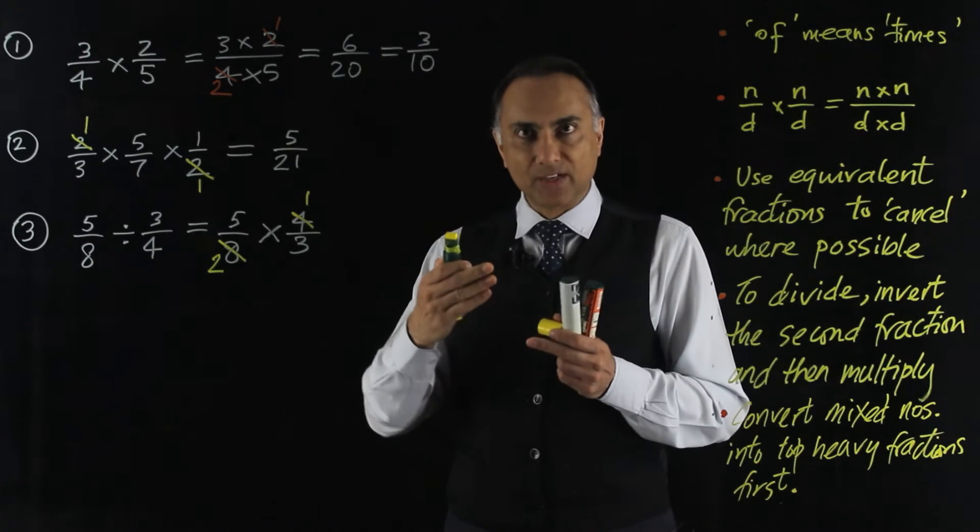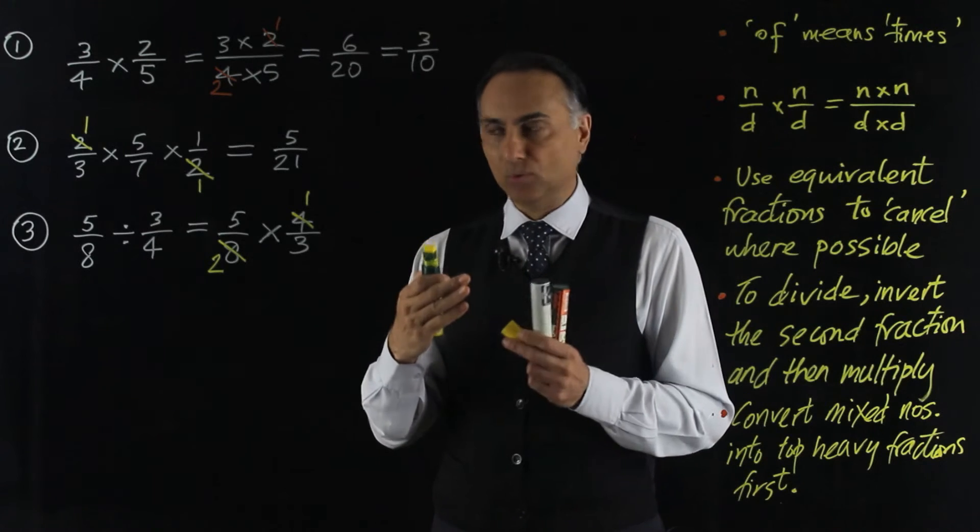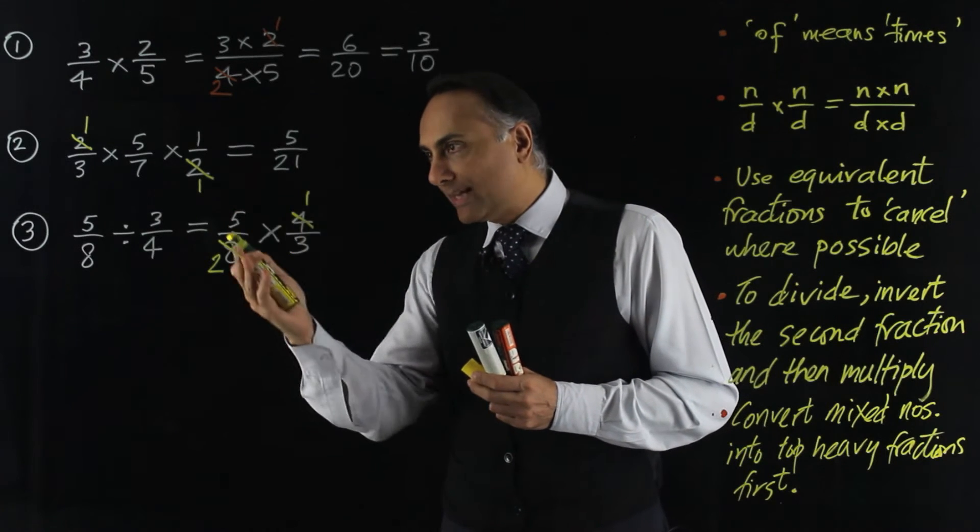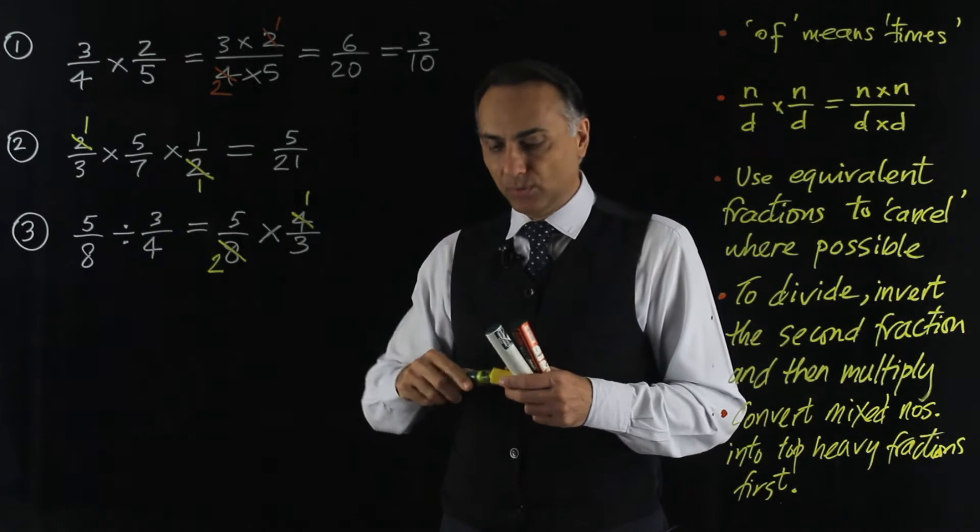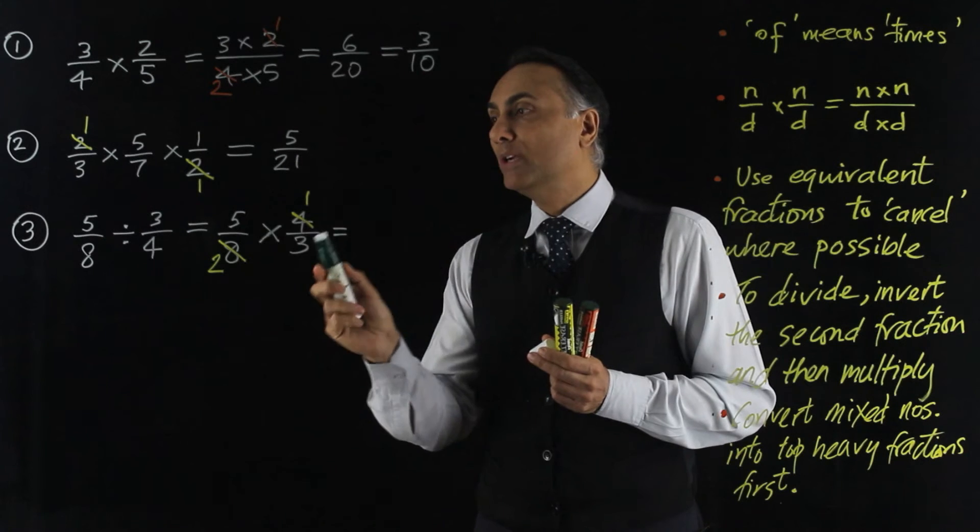and when I divide 8 by 4, it reduces it to 2. So remember, with equivalent fractions you have to divide top and bottom by the same amount. I don't think there's any more cancelling that I can do, so now I multiply out.